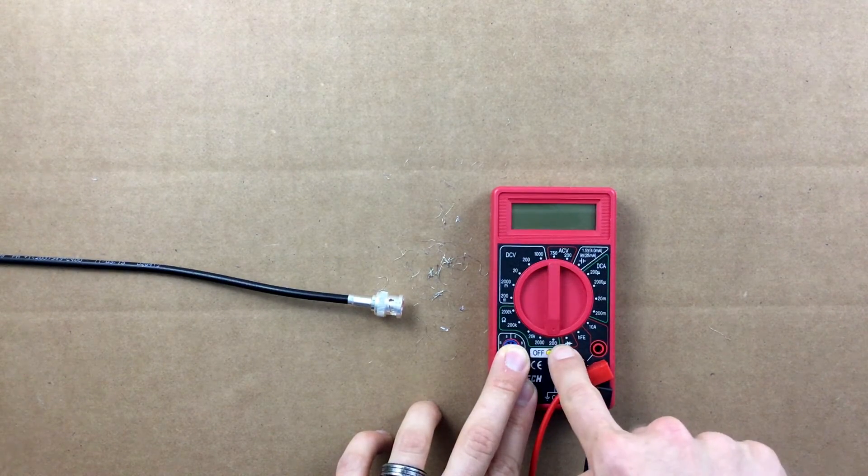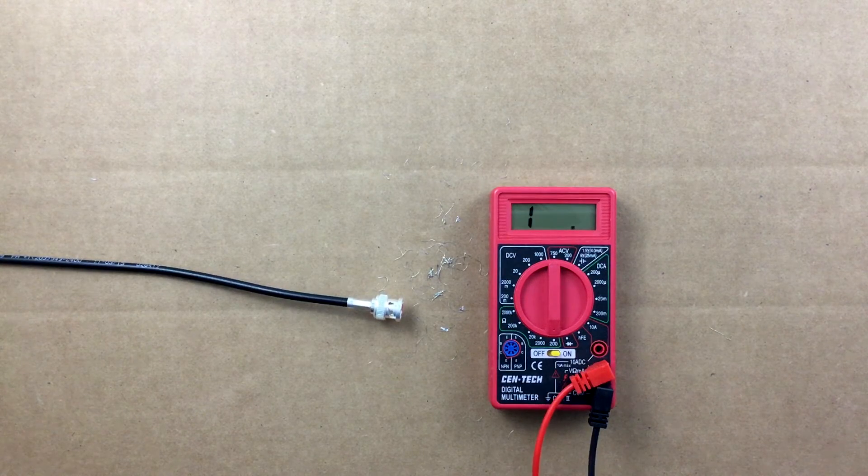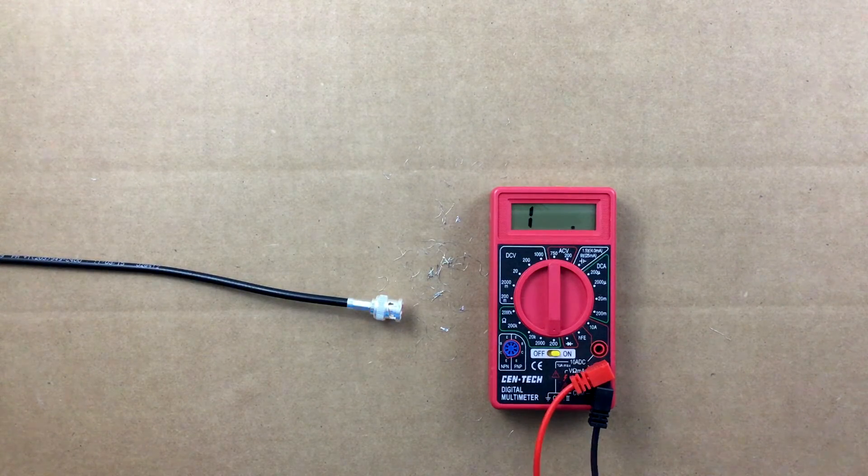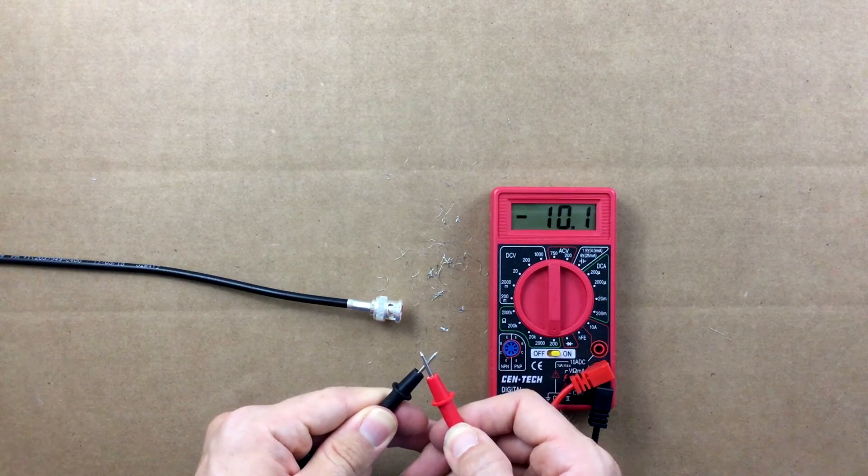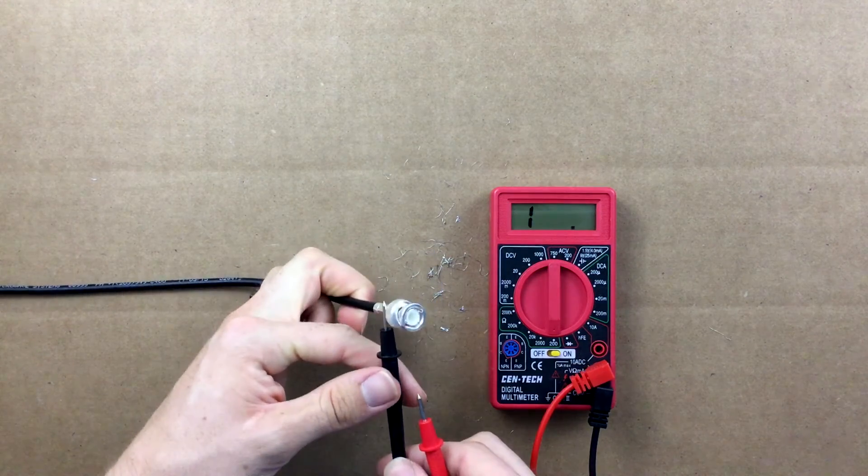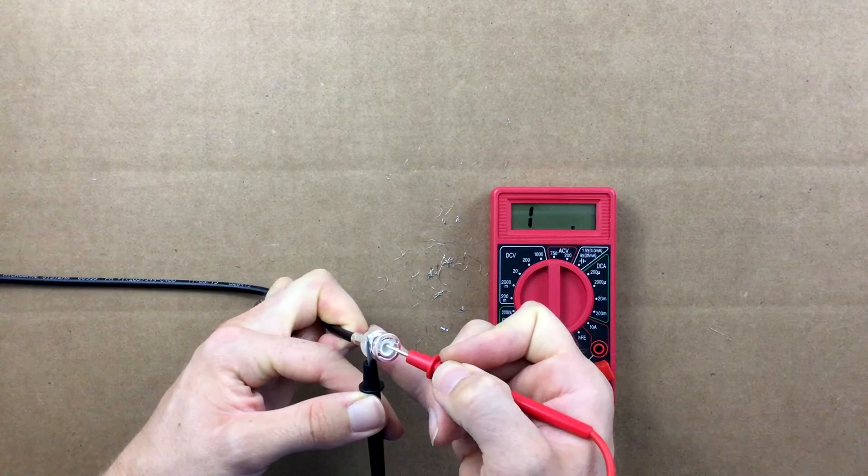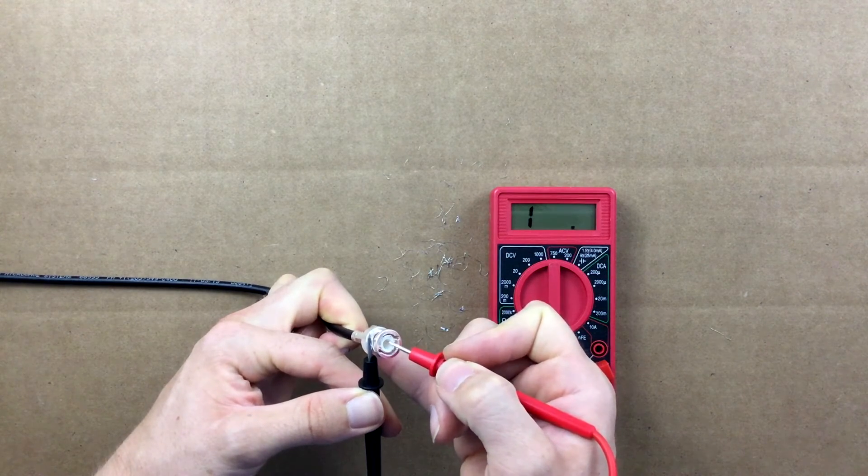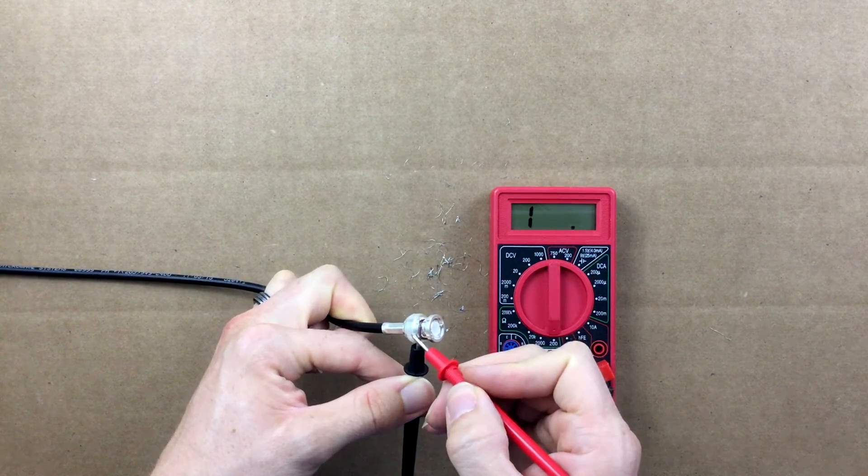Set your multimeter to the lowest ohm scale. Touch the two leads together and it will show you little to no resistance. This is what you do not want to see in your installation. Touch one lead to the body and one lead to the center pin of the connector. My meter is reading that there is infinite resistance, so my installation is in perfect working order.